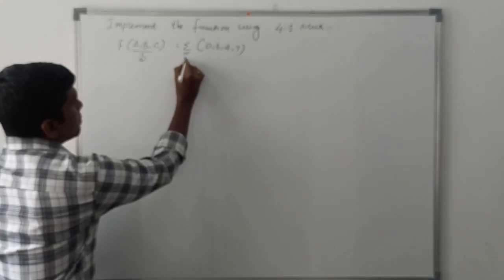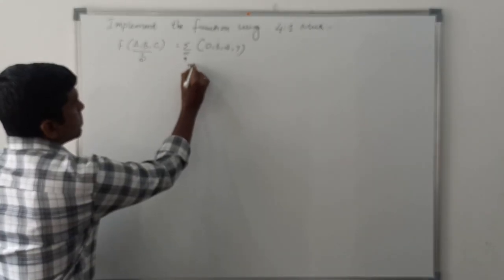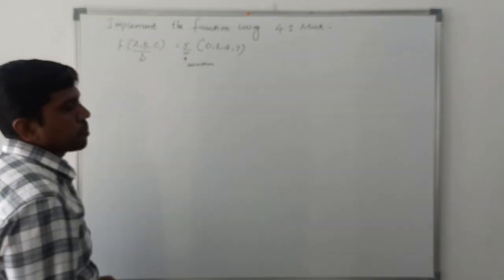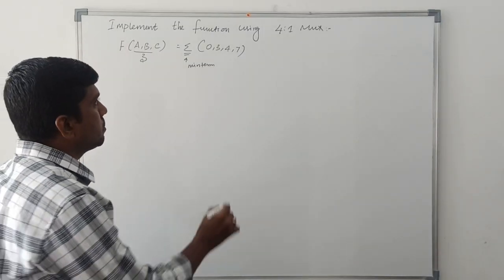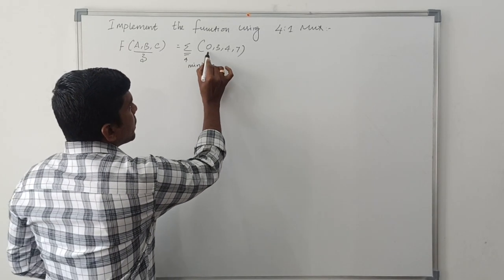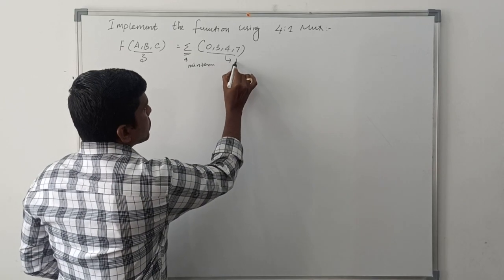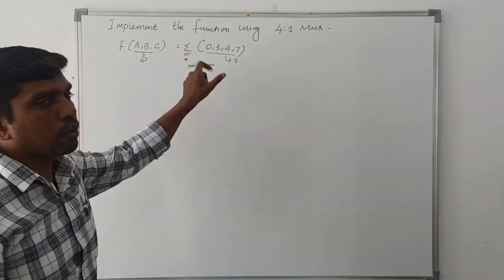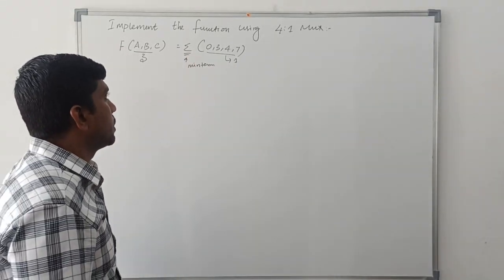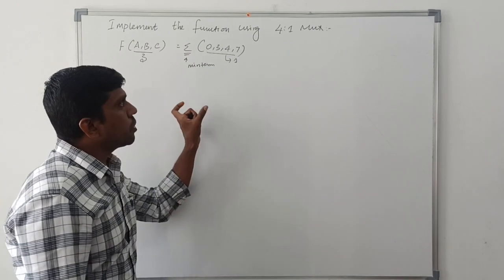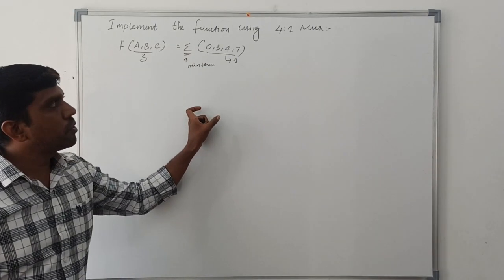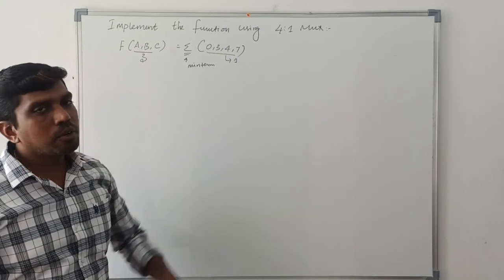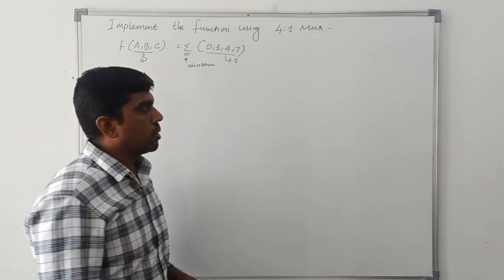The summation represents minterms. The following terms are assigned by 1, and the remaining terms we just ignore. Before solving the problem, I will first explain the block diagram of the 4-to-1 MUX.